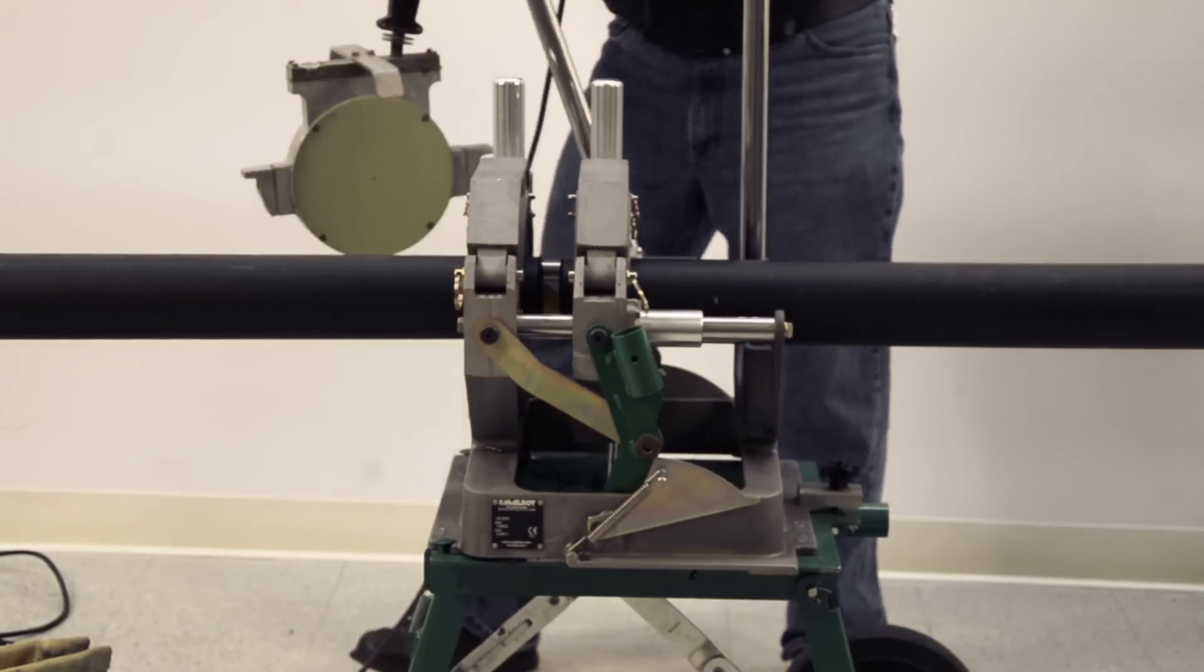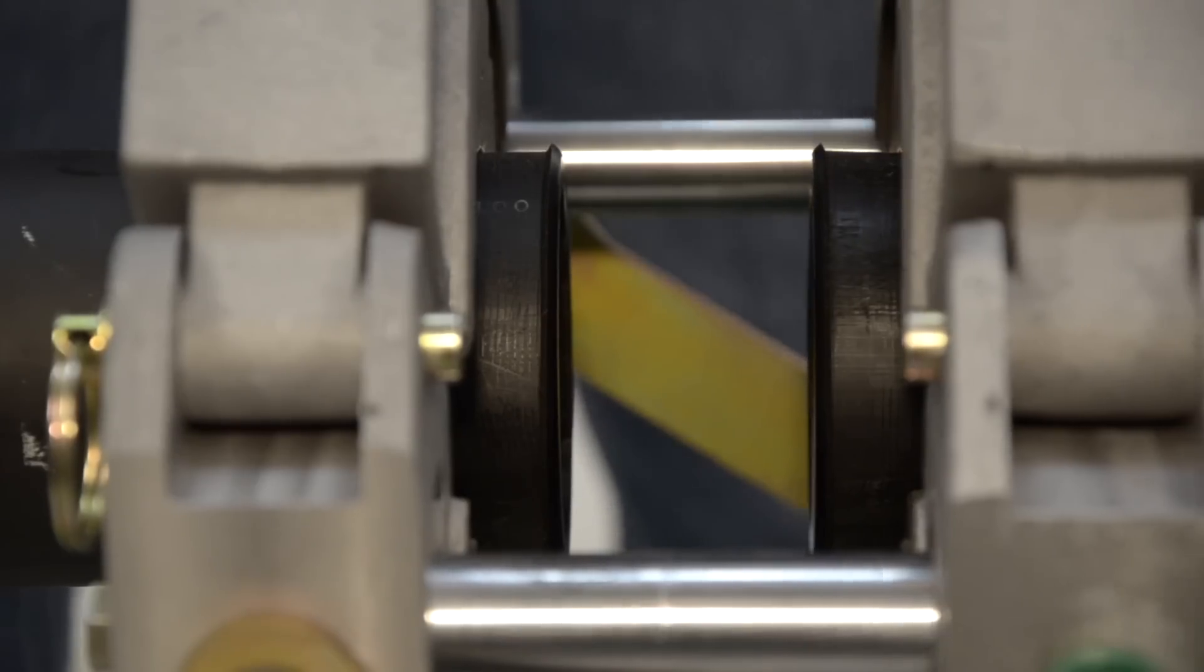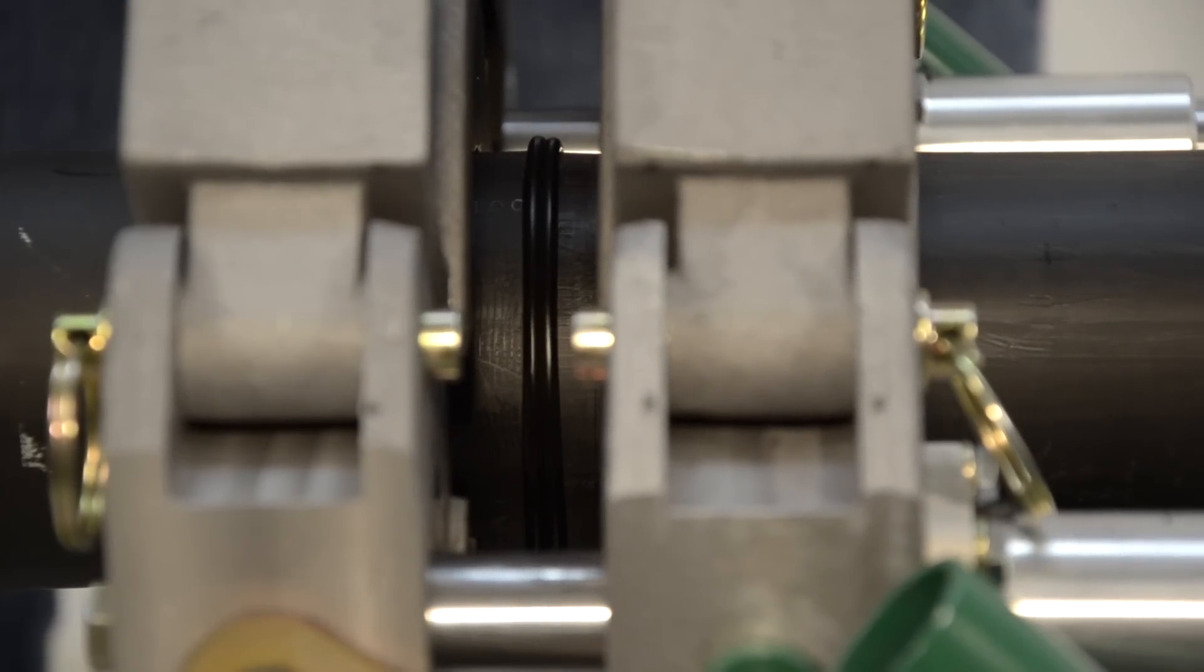With the heater now removed, make a close but quick inspection of the pipe ends to ensure a proper melt. Just be sure that from the time the heater is removed to the point that the carriage is in the closed position is within 8 seconds.